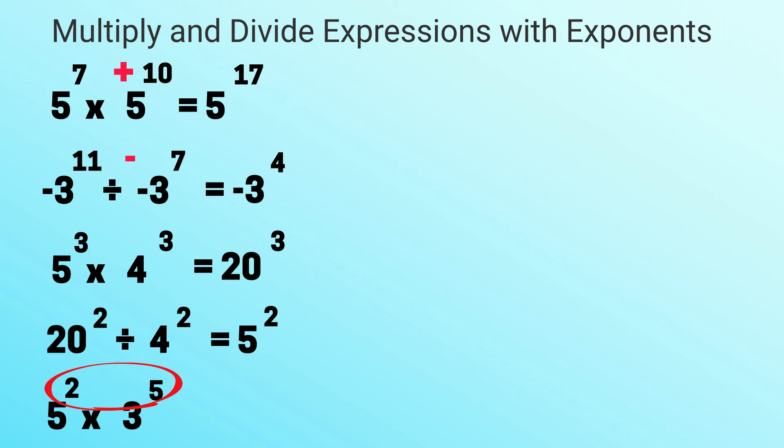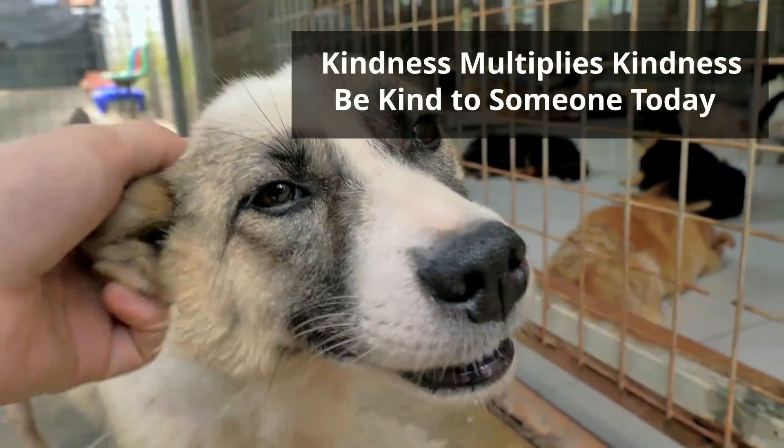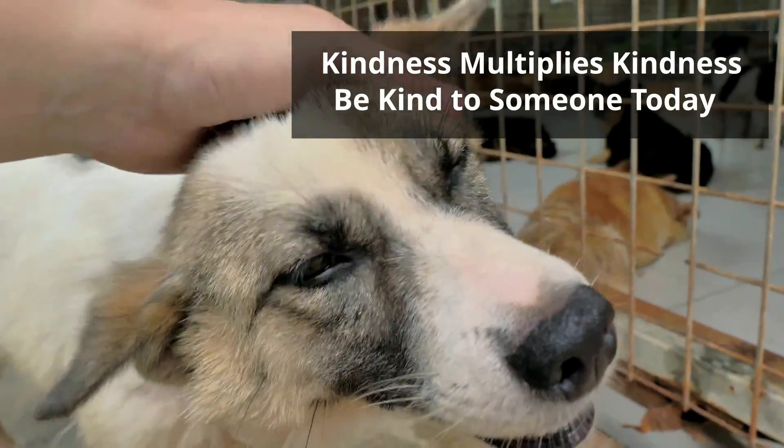And then how about this? We have different bases and different exponents. You can't factor the bases anymore because they are prime numbers. So in this example, this expression with exponents is simplified as much as you can. Thanks for watching and remember kindness times kindness, be kind to someone today.